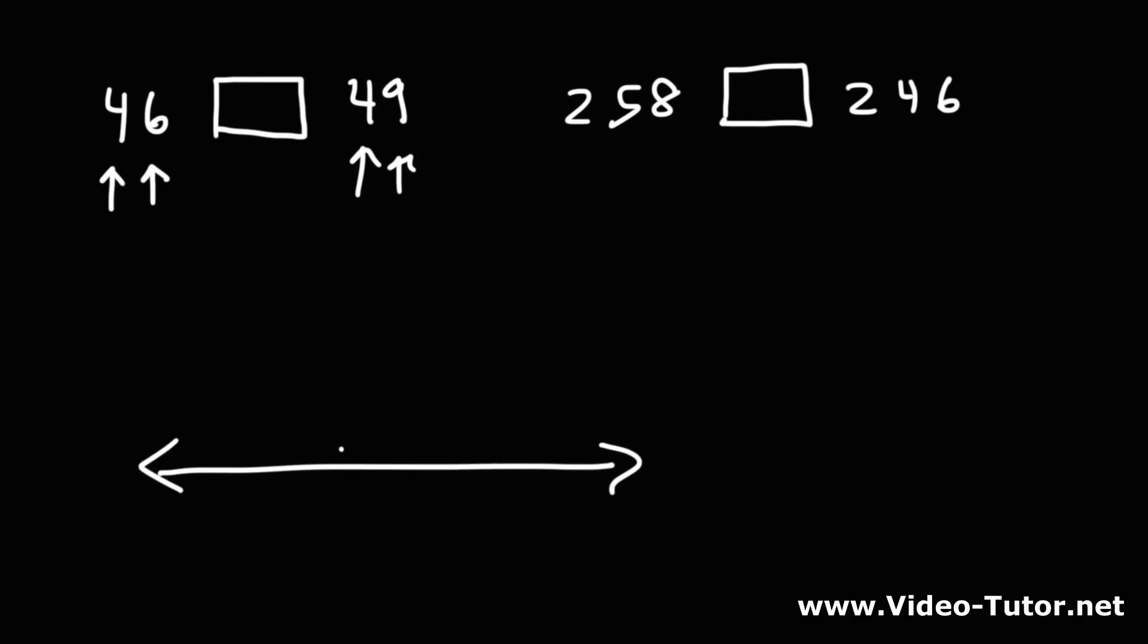If you draw a number line, six would be to the right of zero and nine is to the right of six. The numbers that are to the right on a number line have a higher value. So because nine is greater than six, 49 is greater than 46.